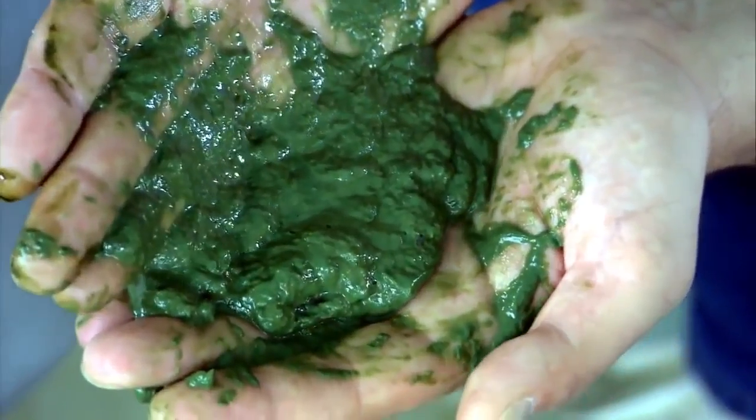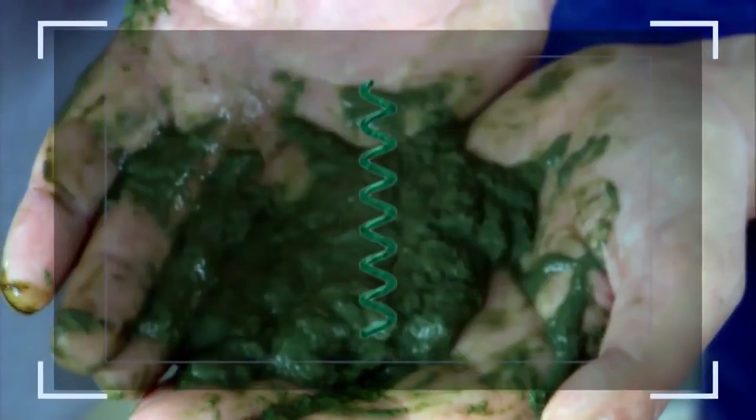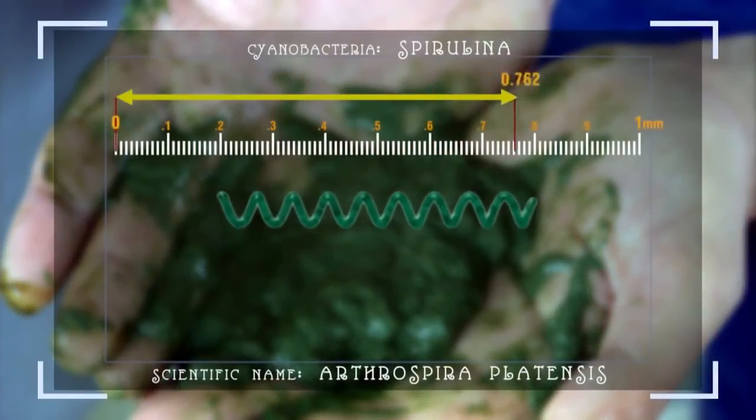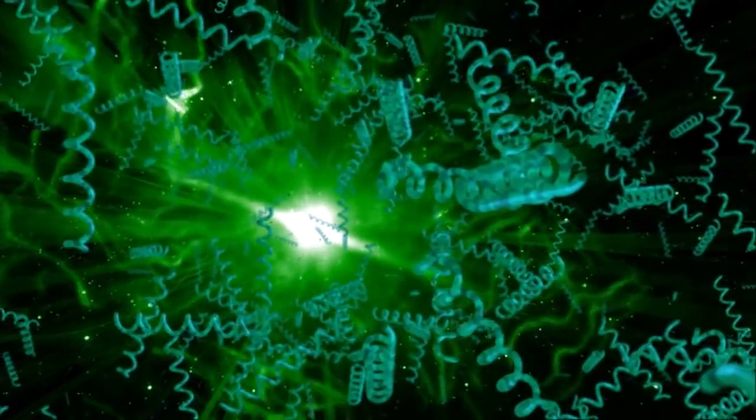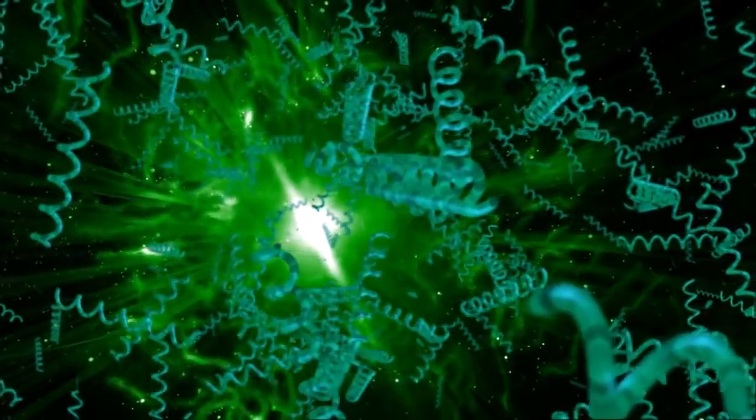But what exactly is the blue-green alga called spirulina? It is a simple, one-celled form of alga, reaching sizes of 0.3 to 1 mm in length. These cells are able to capture the energy of the sun and utilize the nutrients in their watery environment.